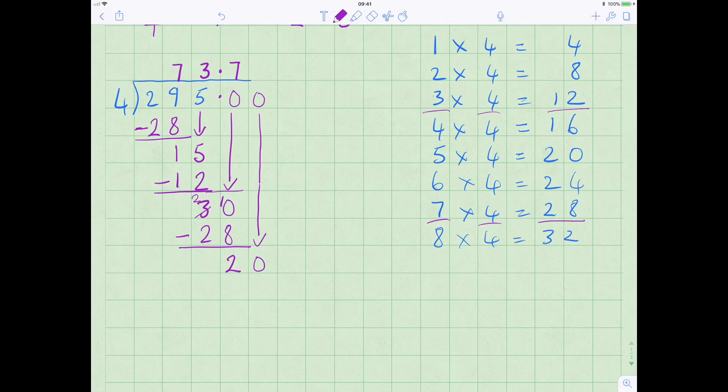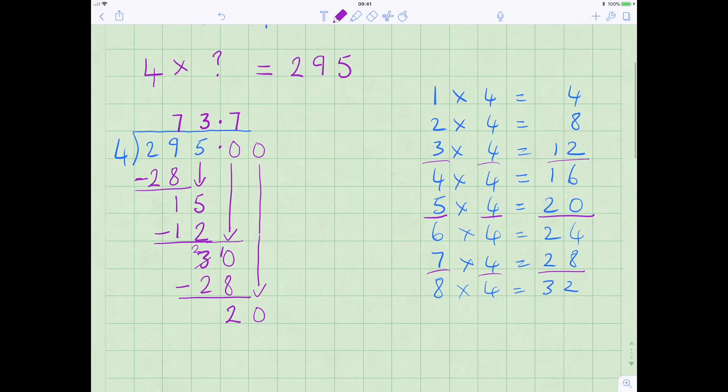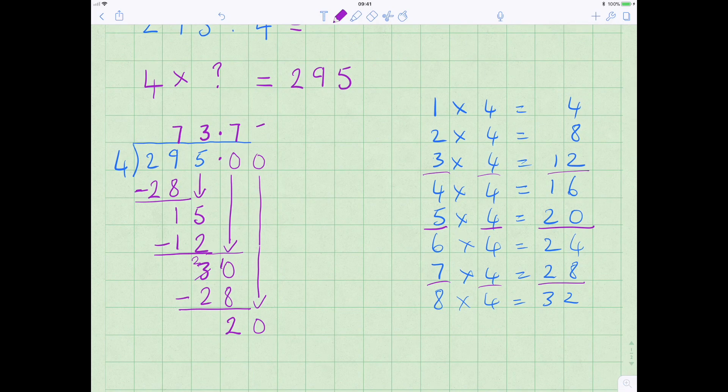And ask ourselves, how many times does 4 go into 20? 5 times 4 is 20, so the answer to that is 5, and 5 times 4 is 20. And for completion we write the 20 down and show that there are no remainders. 0 from 0 is 0, so 0 from 0 is 0, 2 from 2 is 0.